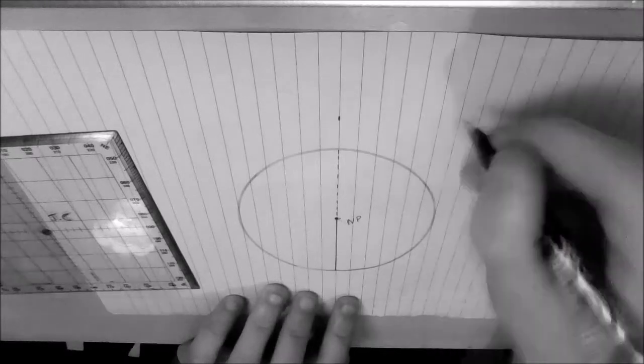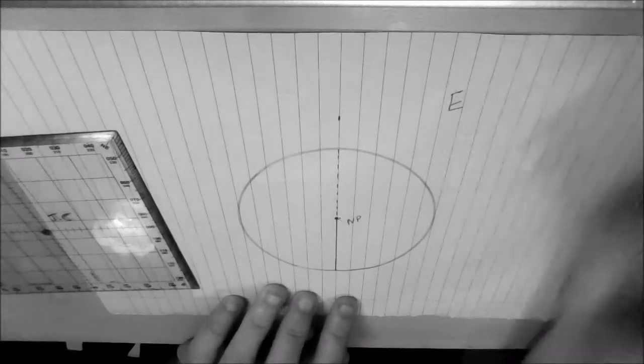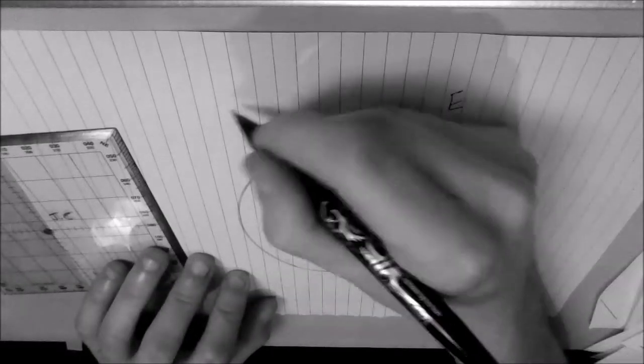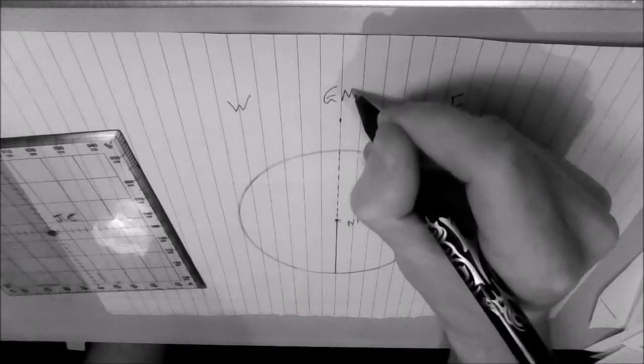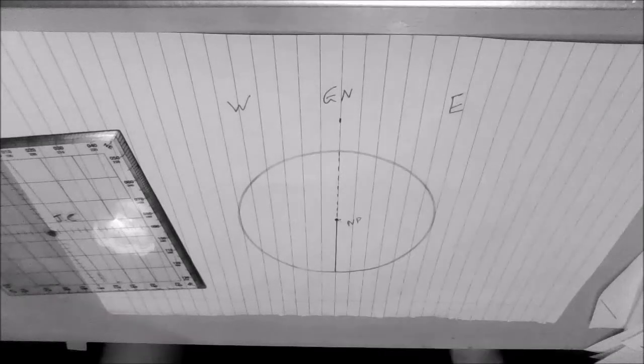The next thing we'll do is mark on our east and our west. Now these don't change regardless of whether you're north pole or south pole. East is always on the right, west is always on the left. And again, grid north we'll mark up here to show that the top of the page is grid north.